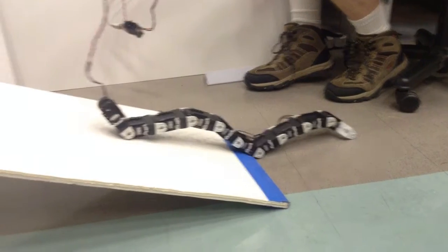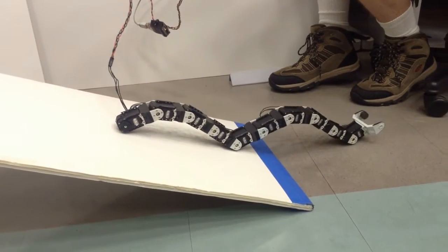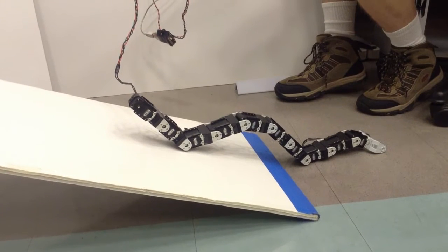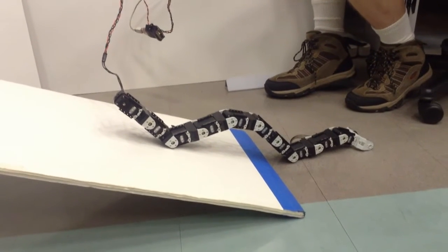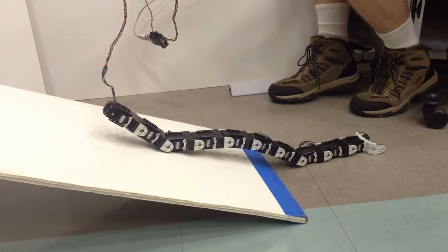Rolling also allowed the robot to travel up steeper inclines than the worm. Here, the robot gets stuck while trying to worm itself up an incline. When the robot switches to rolling, it is easily able to climb the hill.